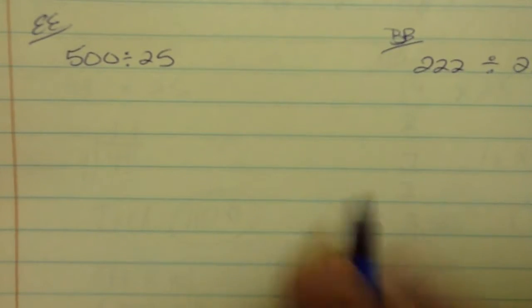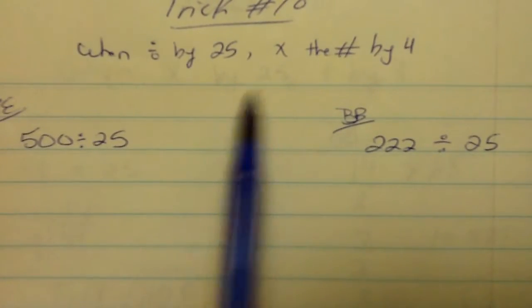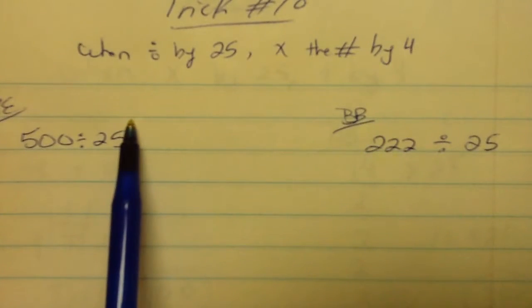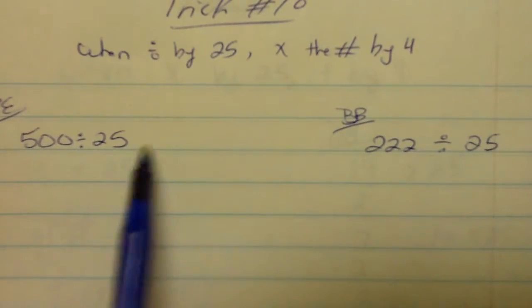If we have 4 quarters, we have $1. So if we have 8 quarters, we have $2. If we have 12 quarters, that's right, we got $3. That's why, you see the relationship.